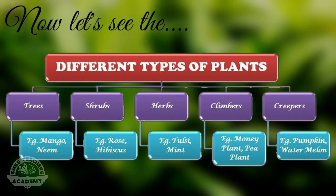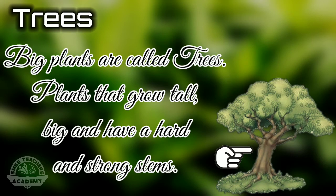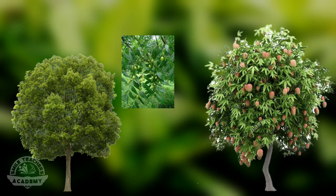Let us study about each type of plant in detail. Trees — big plants are called trees. Plants that grow tall, big and have a hard and strong stem. The stem of a tree is called a trunk. Usually the trunk is brown in color. Example: neem tree, mango tree.